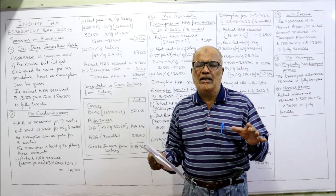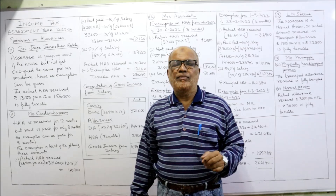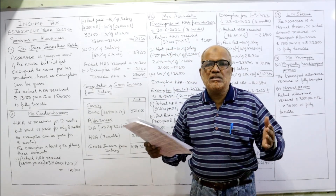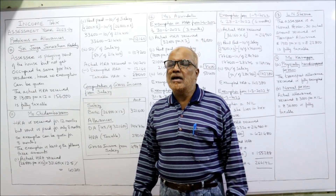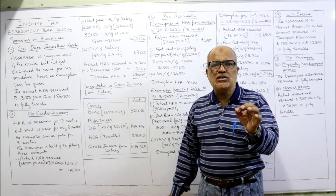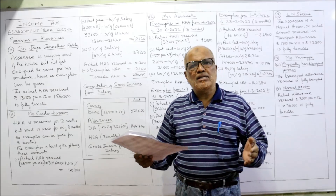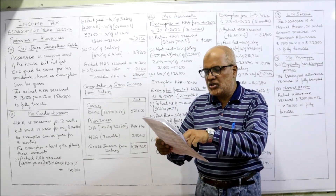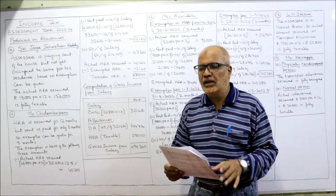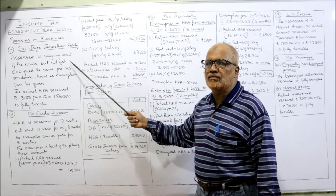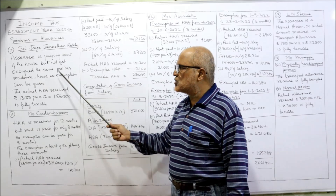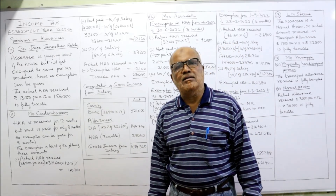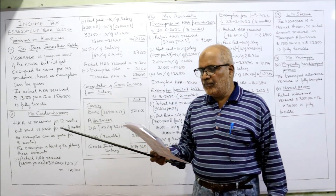Calculate the taxable portion of HRA. According to the provisions of the Income Tax Act, if the assessee is living in a rented house and paying the rent, then only HRA exemption under Section 10(13A) will be allowed. If he is paying the rent but still not yet occupied the house, then the Income Tax Act says no exemption will be allowed — actual HRA received is fully taxable. He took the house on rent but has not yet occupied it, so no exemption. Actual HRA receipt ₹13,000 per month × 12 = ₹1,56,000 is fully taxable.